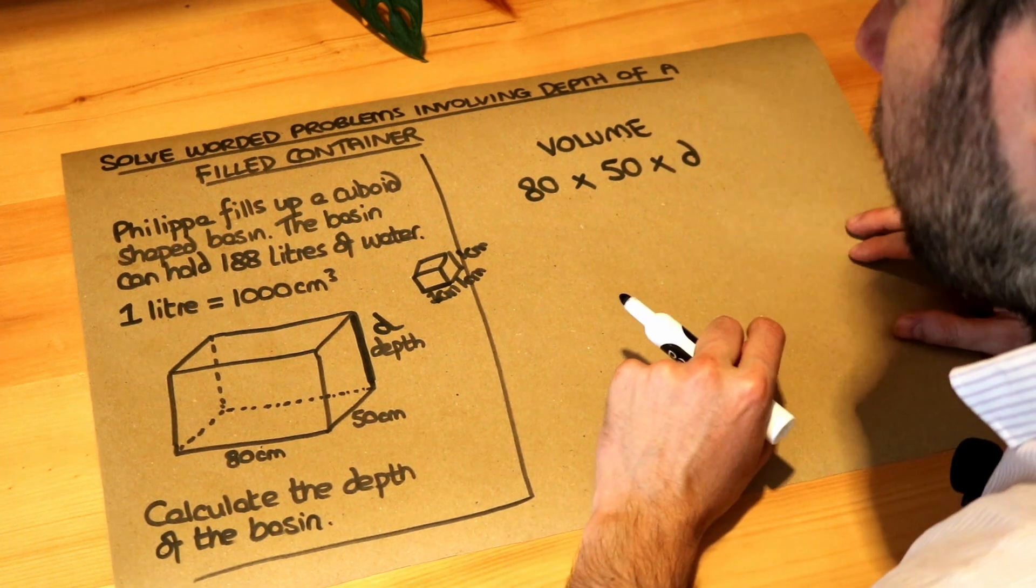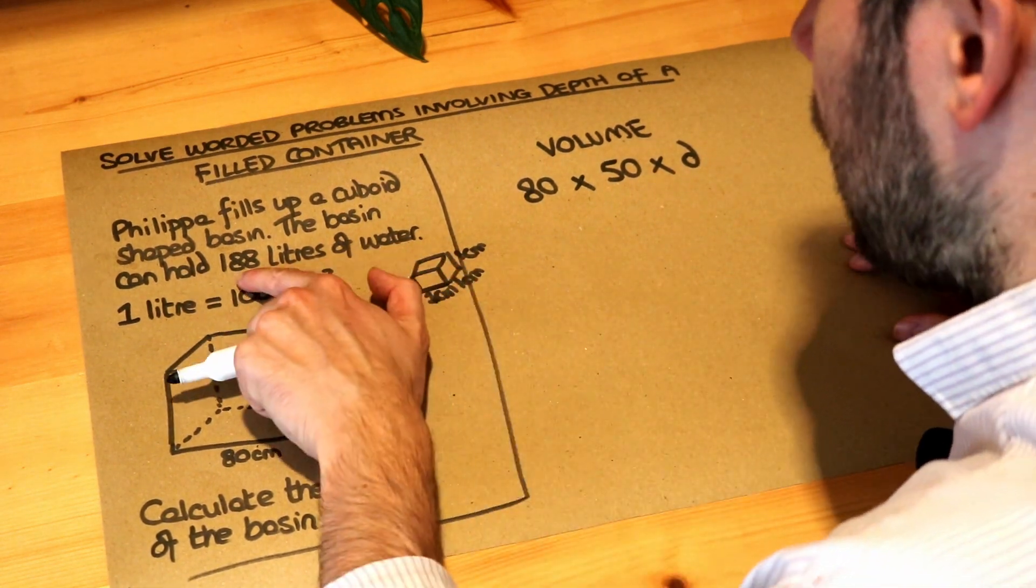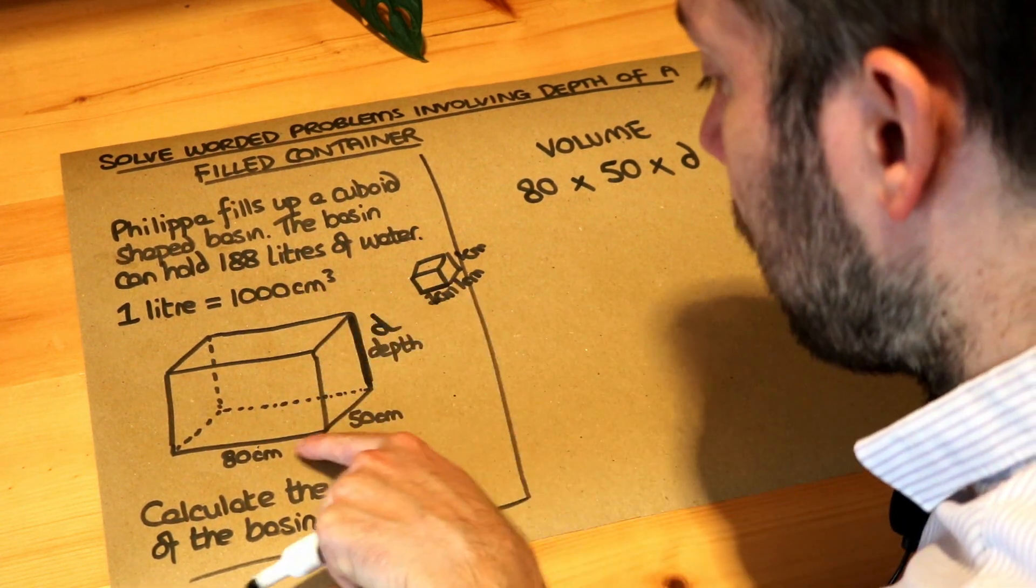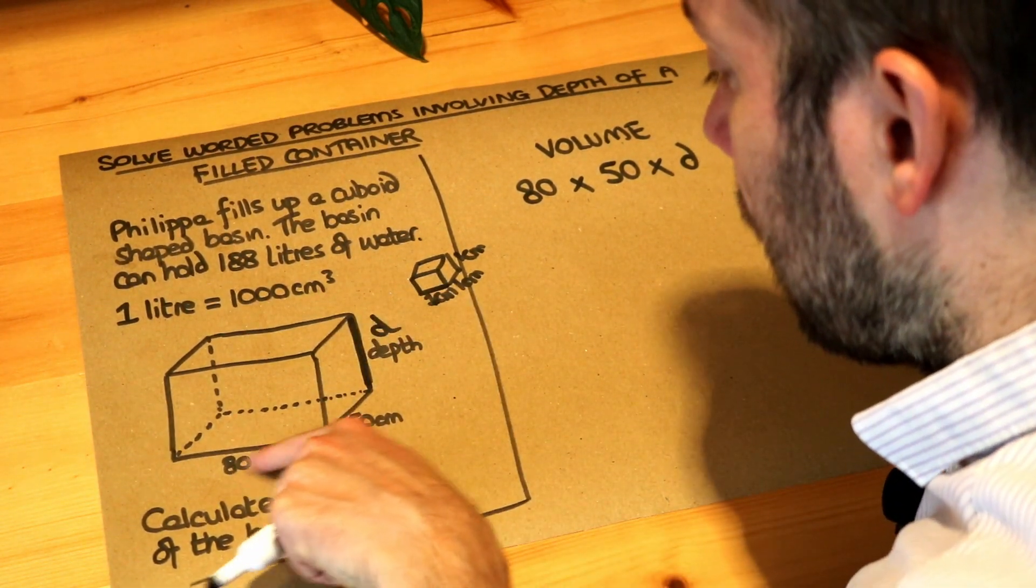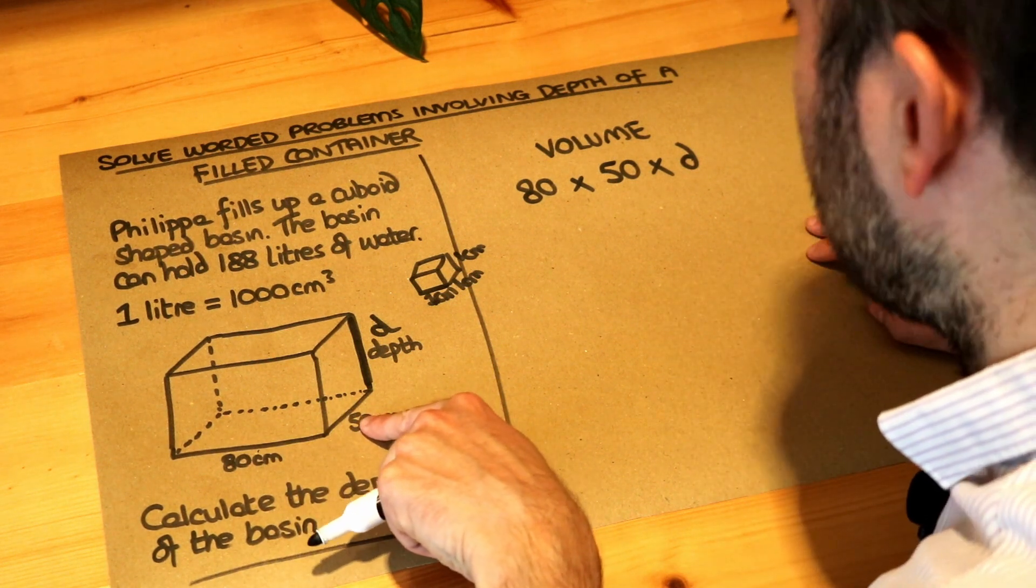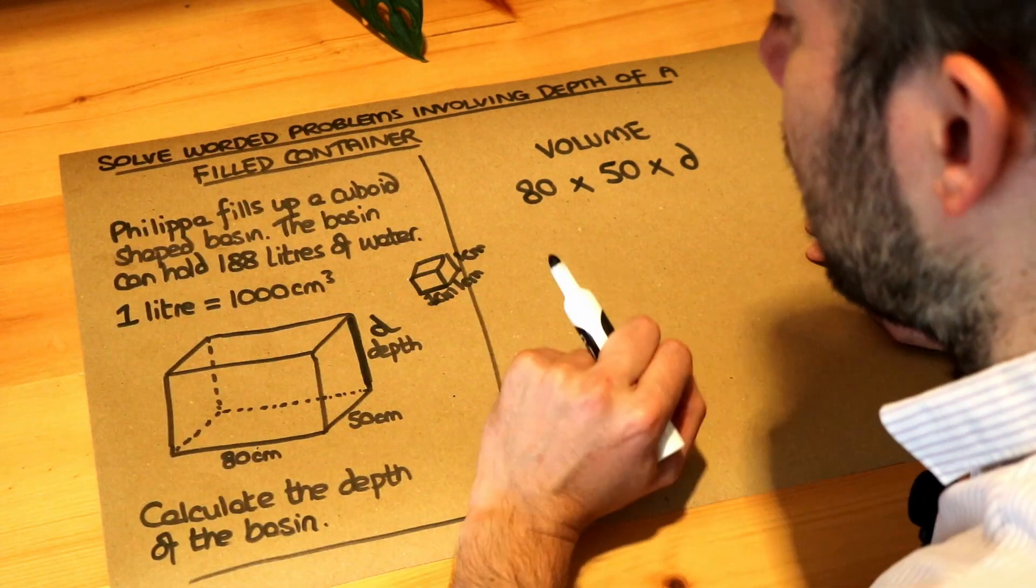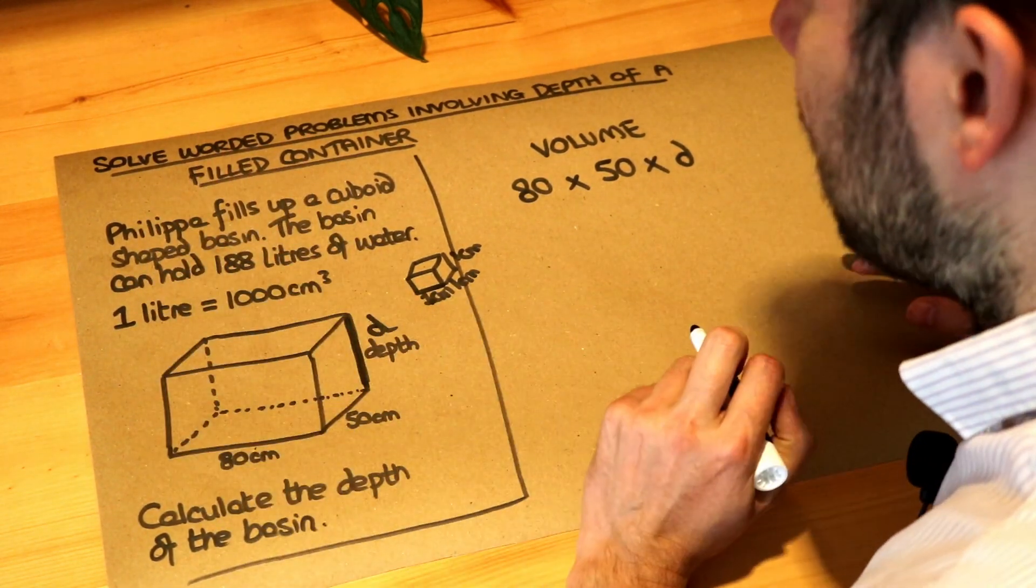But we're also told that the volume is 188 litres. Now we need to convert that to centimetres cubed first because all these units here are in centimetres so we also need this volume of 188 litres to be in centimetres cubed so that it's consistent.